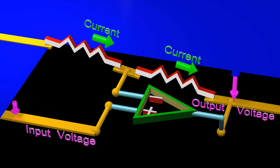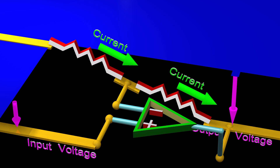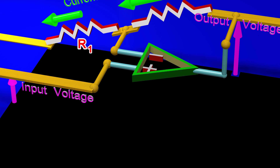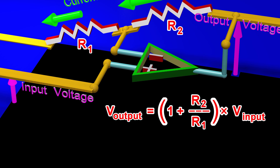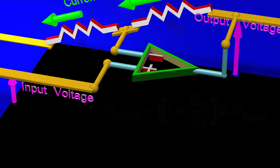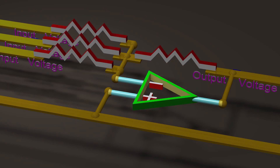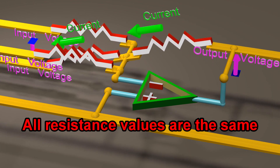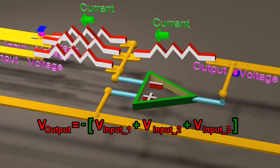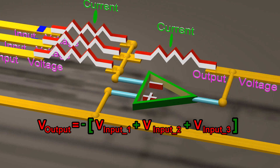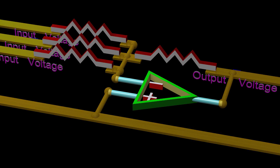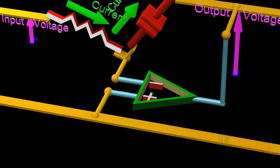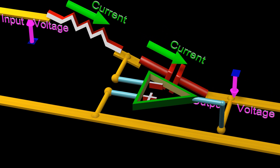This is another common op-amp circuit, and it is called a non-inverting amplifier, because when the input is positive, the output is also positive. In this circuit, all the resistors have the same resistance, and the output voltage is the negative of the sum of all the input voltages. In this circuit, the output voltage is proportional to the negative of the integral of the input voltage.